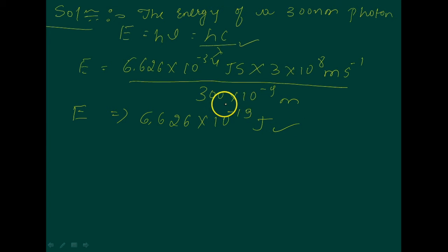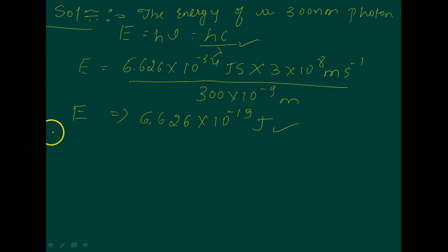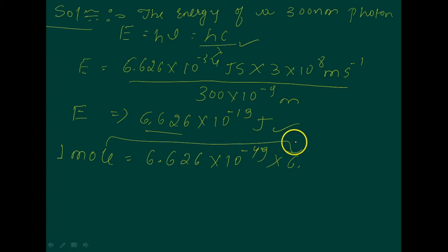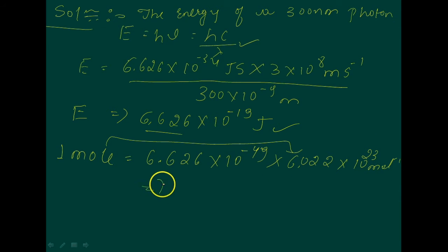Now we need to find the minimum energy needed to remove an electron from sodium, so we convert the photon energy to a per-mole value. For 1 mole, multiply by Avogadro's number: 6.022×10²³ per mole. Multiplying 6.626×10⁻¹⁹ by 6.022×10²³ gives 3.99×10⁵ joule per mole — this is the energy of 1 mole of photons.